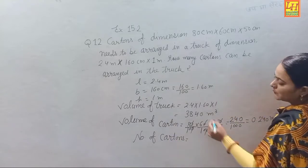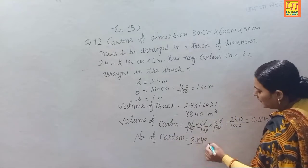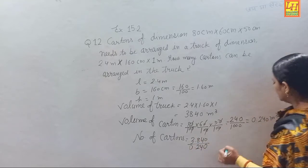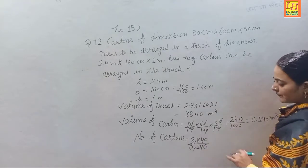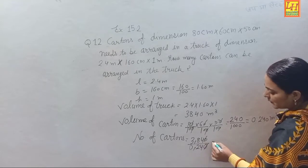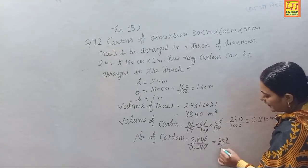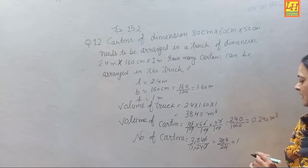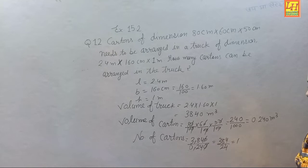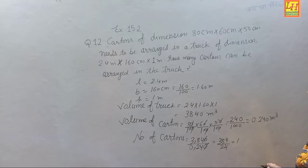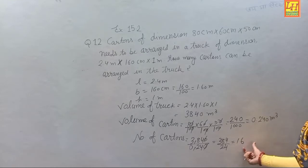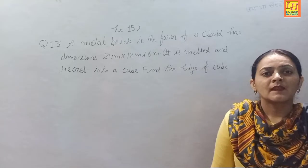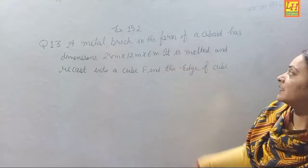Number of cartoons = 3.840 ÷ 0.240. Cancelling the decimal points — 384 ÷ 24 = 16. So 16 cartoons can be arranged in the truck.